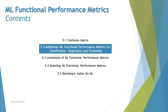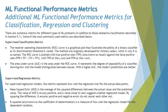In our previous tutorial we covered some of the major performance matrices, including the confusion matrix and other things like accuracy, precision, recall, as well as the F1 score. Now we'll be adding more — looking at what exactly happens with supervised and unsupervised ML models and how performance can be measured with these matrices.